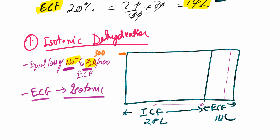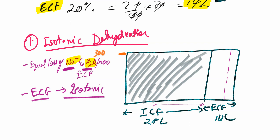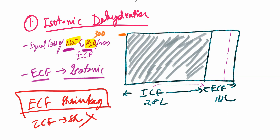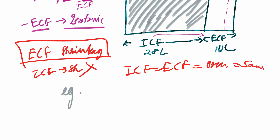Therefore, the intracellular compartment remains the same. The osmolarity of both the intracellular fluid and extracellular fluid compartments remains totally normal in isotonic dehydration. The primary abnormality in isotonic dehydration is extracellular fluid compartment shrinkage only — there is no intracellular fluid compartment shrinkage. The osmolarity in both compartments remains the same.